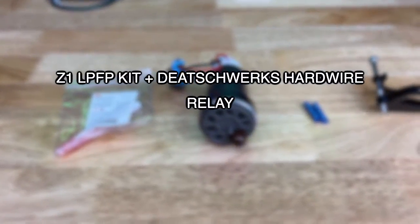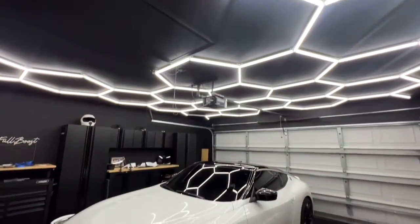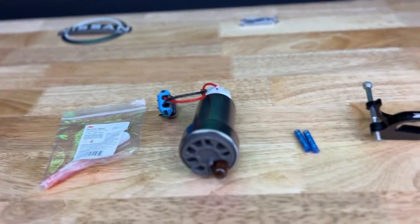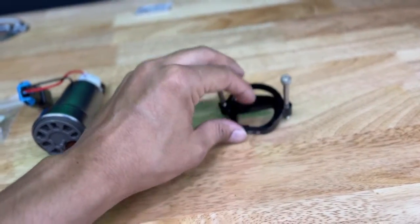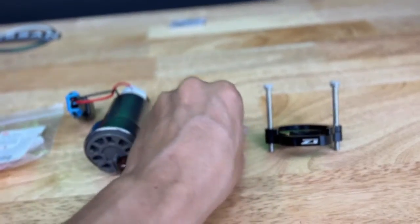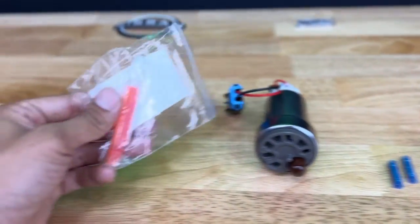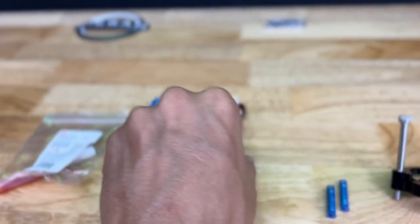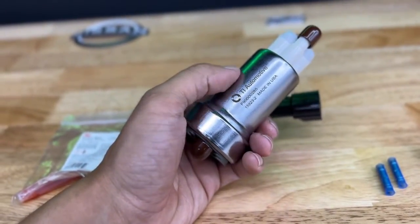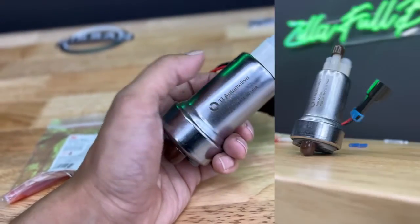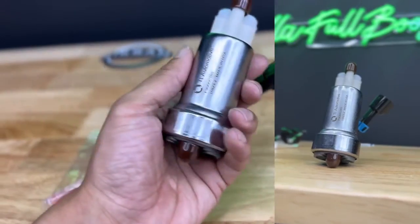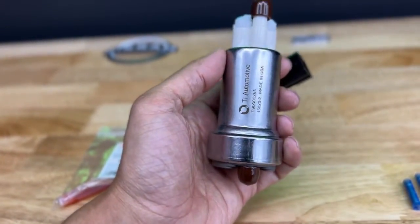Today we're going to be installing the Z1 low pressure fuel pump for the Nissan Z. The kit is pretty simple. What you get is their Z1 low pressure fuel pump bracket that's going to hold the fuel pump. You get two butt splices, a thread locker, and of course a Walbro fuel pump. This pump requires a lot more draw, so it's advisable to wire in a relay that way this thing gets powered directly from the battery.